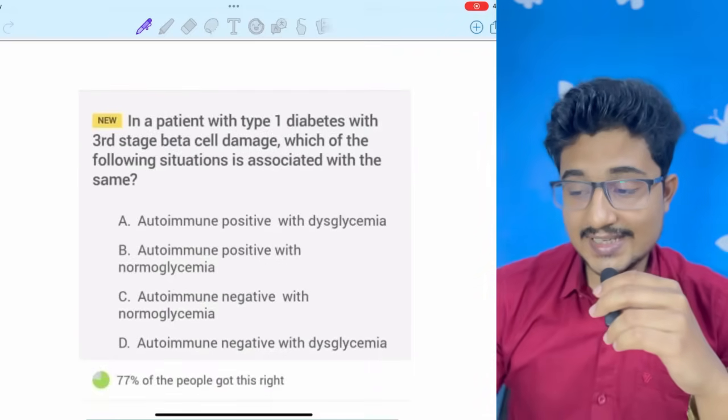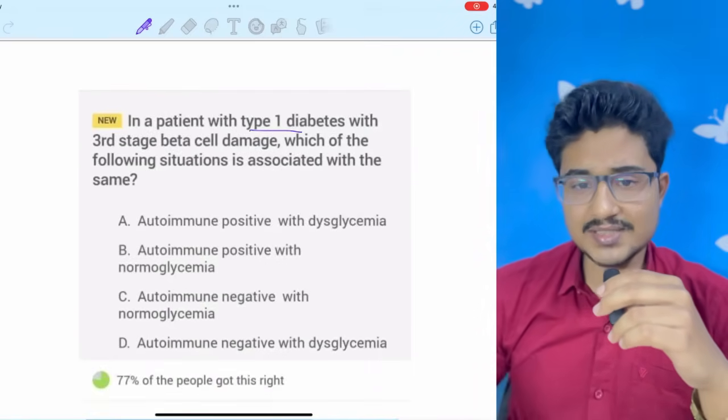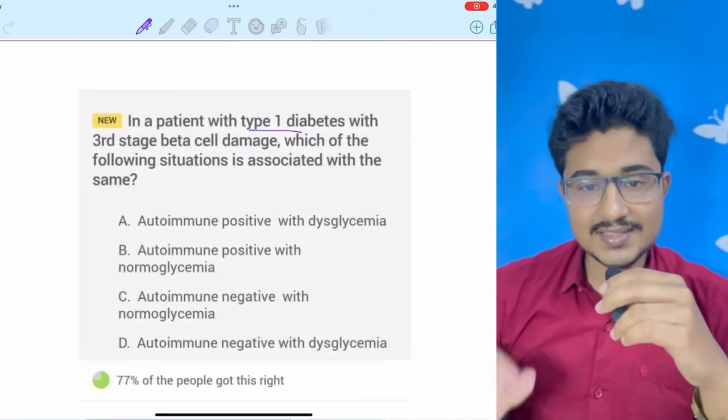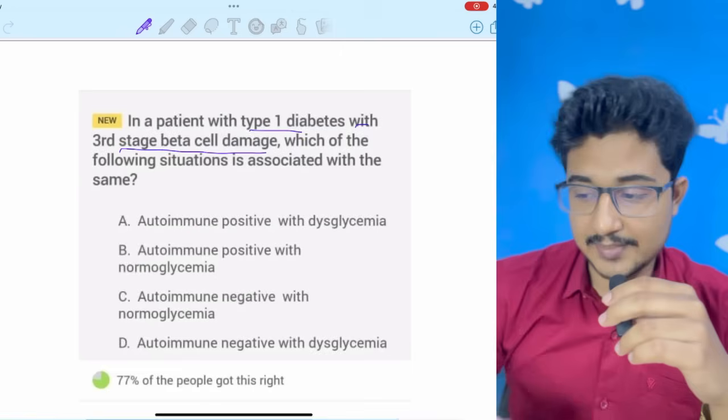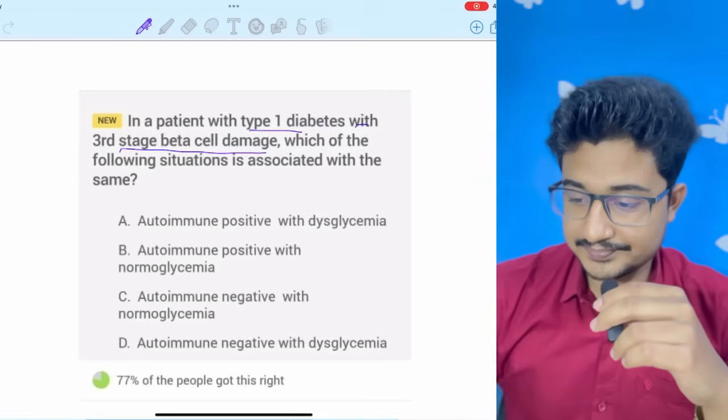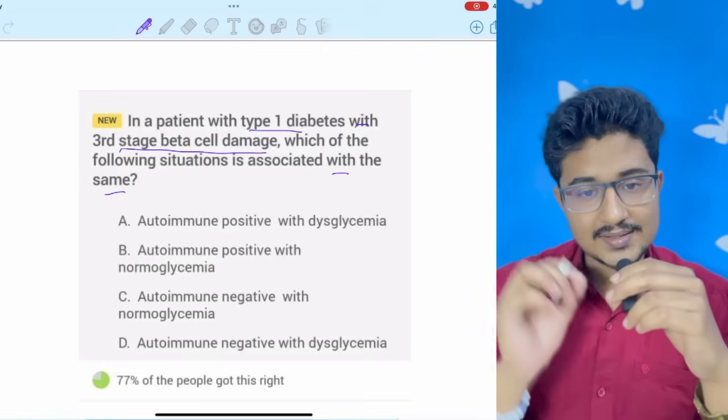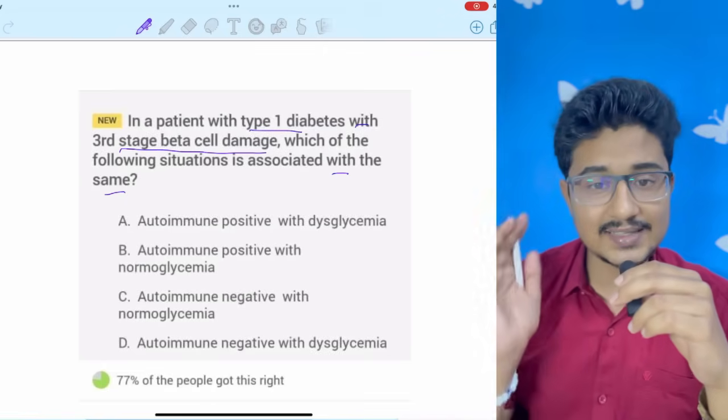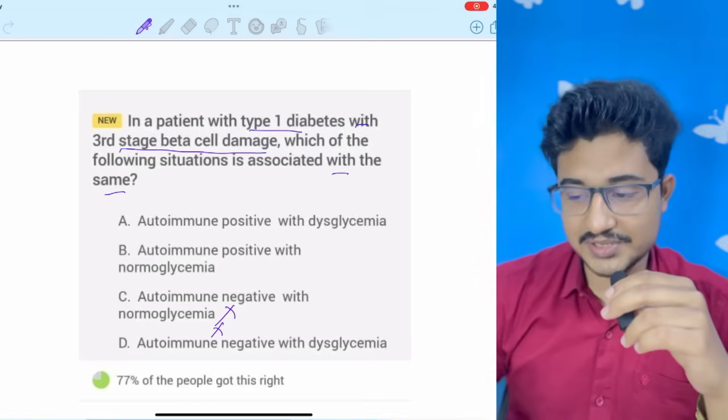Coming to the next question. In a patient with type 1 diabetes. Type 1 diabetes means autoimmunity against the beta cells. With third stage beta cell damage. I don't have an idea, but I will have to mark an option. Which of the following situation is associated with the same? This is type 1 diabetes. As I said that autoimmunity is there. So, autoimmunity negative will not be the options.